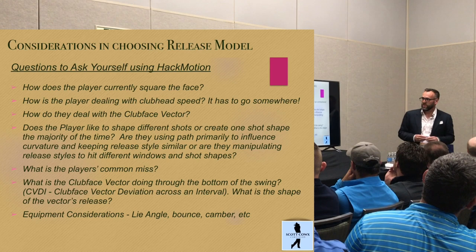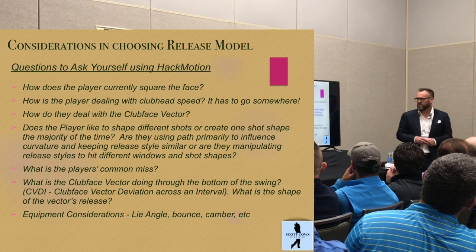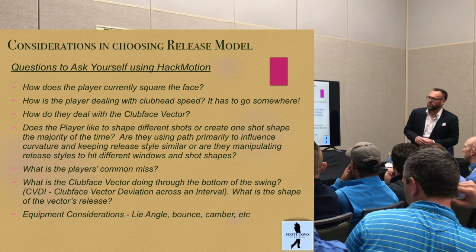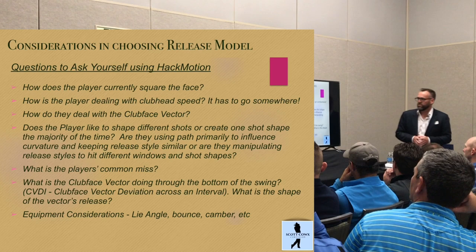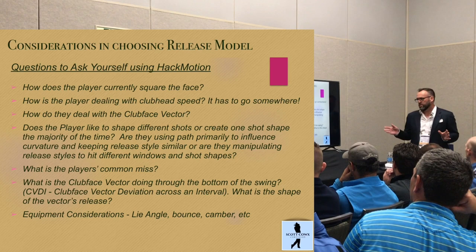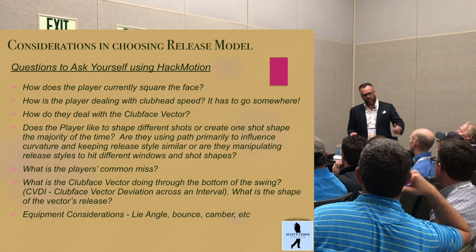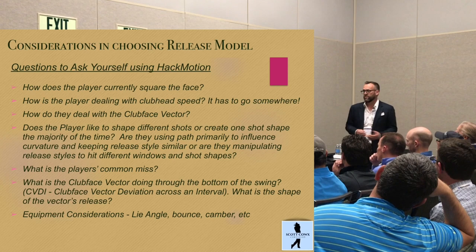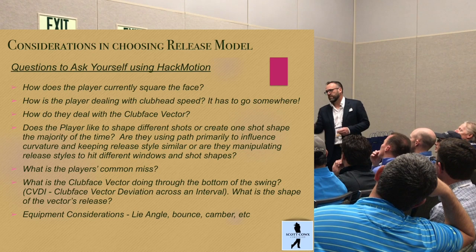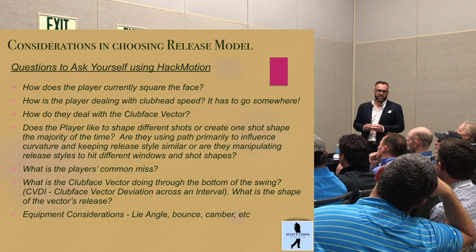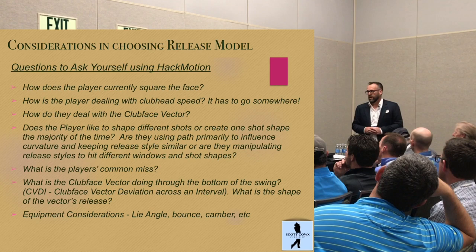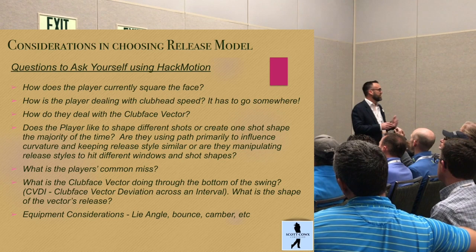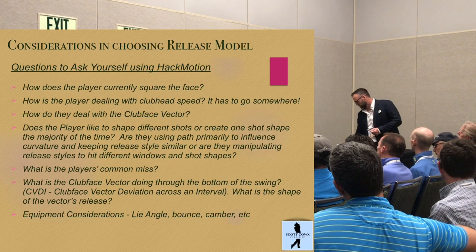There's cool data Guru took of Trevino — with nearly negative 60 degrees of flexion hitting some very low stingers. What is the player's common miss, and what is the clubface vector doing through the bottom of the swing? I came up with the term 'clubface vector deviation across an interval' eight years ago, wanting to know from one foot before impact to one foot after impact what that face vector was actually doing. There are also equipment considerations — lie angle, bounce, camber — and how the club enters the turf. From a fitting perspective there's interesting conversation in matching up wrist release style with the right bounce.